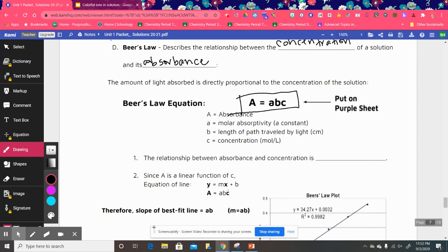The relationship between absorbance and concentration is a directly proportional relationship. It is direct, or we could say that it is a linear relationship.